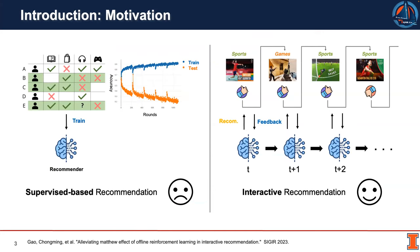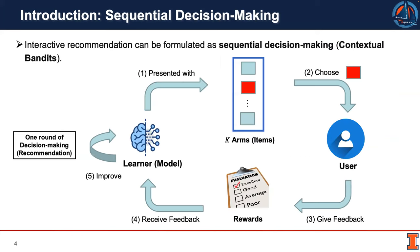In the past, many existing works focus on the static learning-based recommendation to train a recommender model on the collected data. However, the discrepancy between the training and the testing accuracy may increase over time. Therefore, the ideal recommender system should adapt over time to consistently meet the user interest. It is natural to formulate the interactive recommendation as a sequential decision-making.